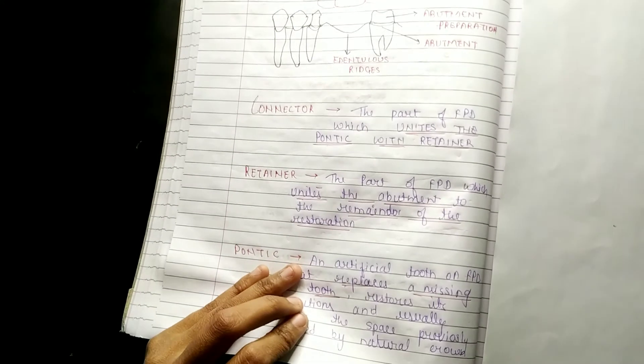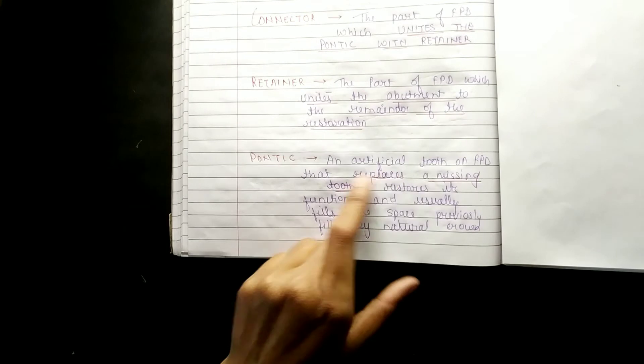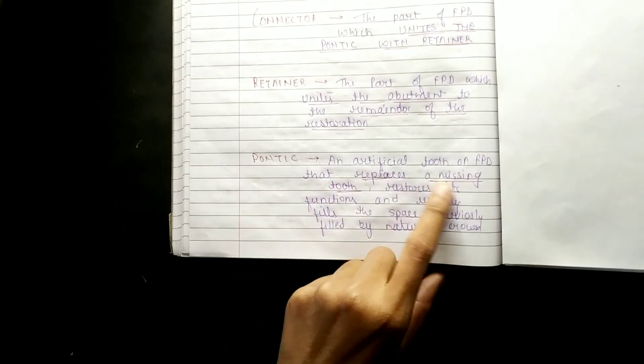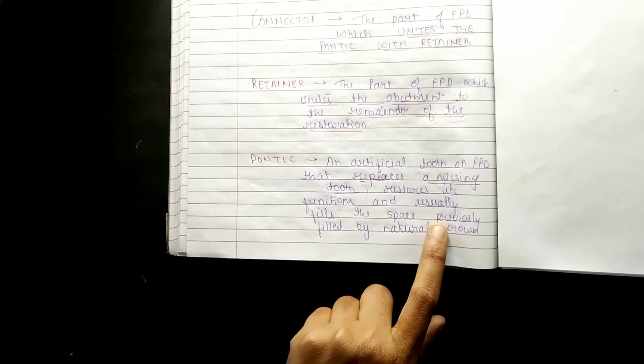Pontic: the artificial tooth on FPD that replaces a missing tooth, restores its function, and usually fills the space previously filled by natural crown.